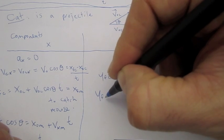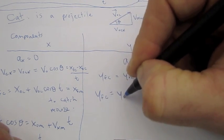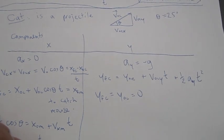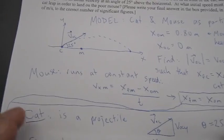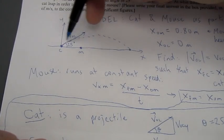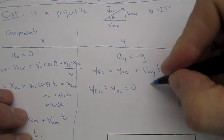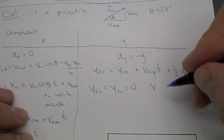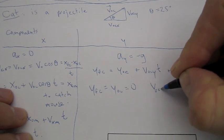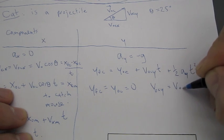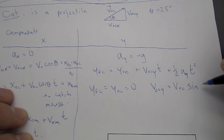And, Y final of the cat is equal to Y initial of the cat, which is equal to 0. We start, he starts and ends at the same Y position, which is on the ground. Okay, it's a flat ground. And, V initial of the cat comes from that triangle above. V initial in the Y direction is equal to V initial of the cat times now sine of theta.